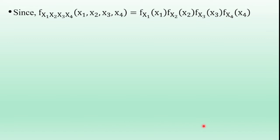Since f(x1, x2, x3, x4) = f_X1(x1) * f_X2(x2) * f_X3(x3) * f_X4(x4), this satisfies the condition of statistically independent random variables. So x1, x2, x3, x4 are statistically independent, meaning the joint density function equals the product of their individual density functions.